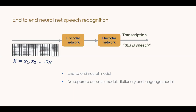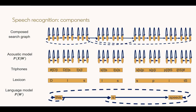Coming back to the traditional speech recognition system — it is comprised of a language model, which tells us how to form sentences from words. Then we have a lexicon at the next level, which tells us how to go from a sequence of phonemes — like 'dh', 'i', 'sir' — to words. For example, the word 'this' is the phoneme sequence 'dh', 'i', followed by 's'.